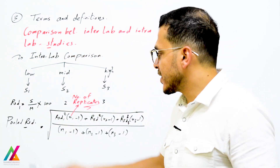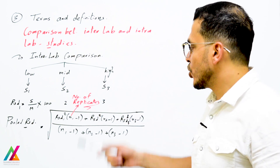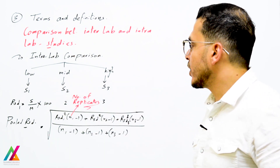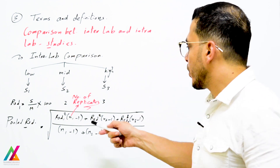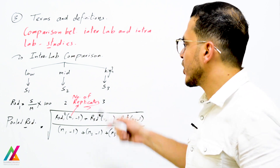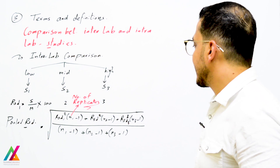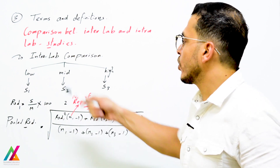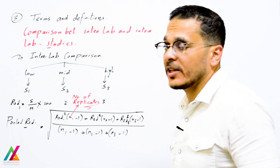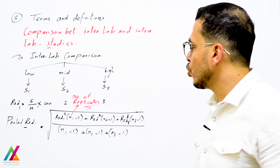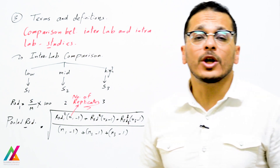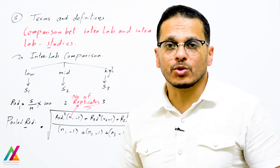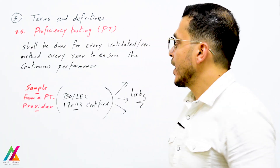You also calculate the variance across all three levels through the pooled relative standard deviation. The formula is: pooled RSD = square root of [(RSD1² × (n1−1)) + (RSD2² × (n2−1)) + (RSD3² × (n3−1))] divided by [(n1−1) + (n2−1) + (n3−1)], where n is the number of replicates per level. This pooled RSD should also be within the acceptable range, such as less than 20% per the guideline used.